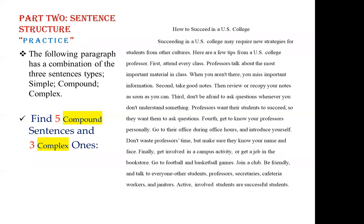Here is a practice paragraph combining all three sentence types — simple, compound, and complex. There are five compound sentences, two simple sentences joined with a comma and coordinating conjunction, and three complex ones. Find them by yourself and send your answers to the Telegram group; the correct answers will be provided.